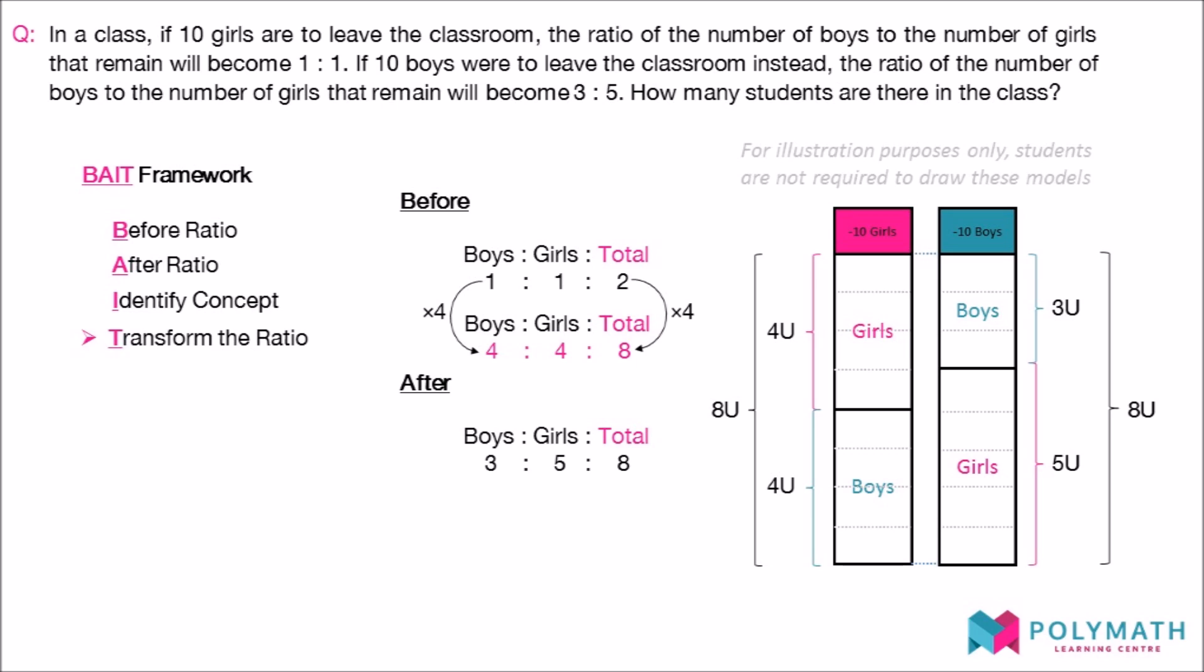The difference of 1 unit between the 4 units of girls in the before ratio and the 5 units of girls in the after ratio is due to 10 girls leaving the classroom. Thus, this difference of 1 unit represents 10 pupils.